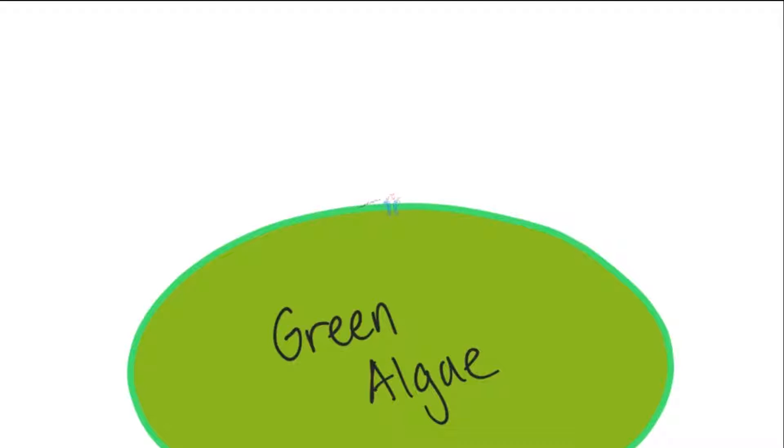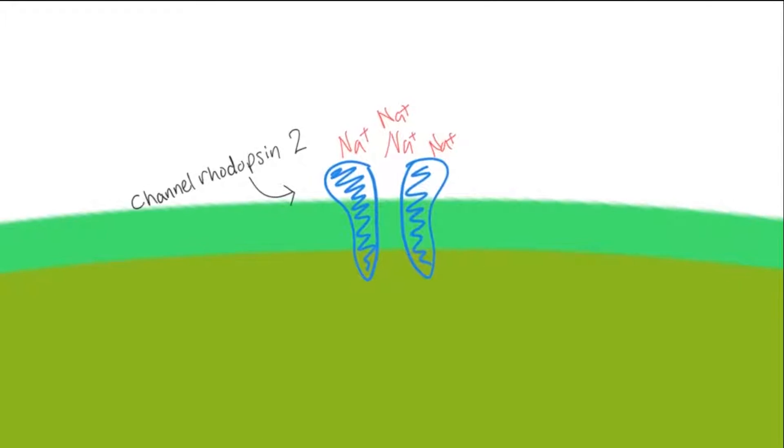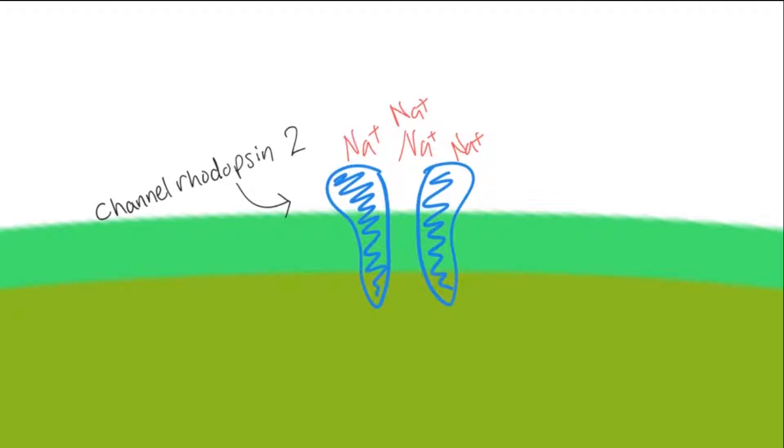So here we have a green algae cell. If we zoom into its cell membrane, we see that there's a protein called channelrhodopsin-2. When light shines on this protein, it allows positive ions such as sodium to flow through.